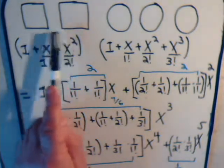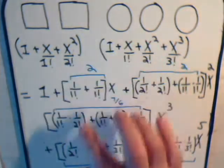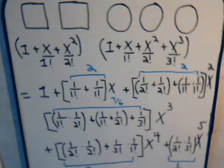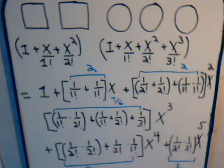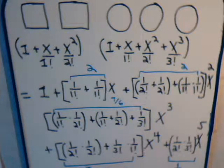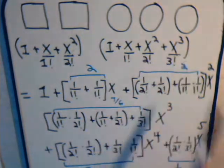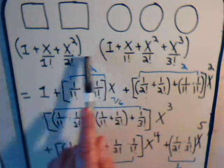What we considered was: we had two square objects and two round objects, and we asked ourselves how many different ways can we choose from these objects where the order matters — for example, how many ways can we choose three of these objects. We described the exponential generating functions for the squares and for the circles, and then we multiplied the two expressions together.